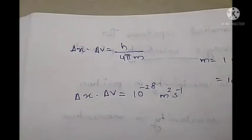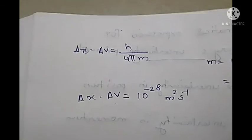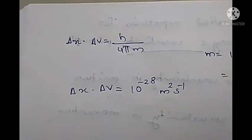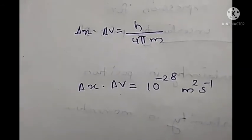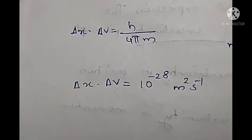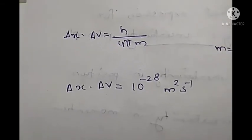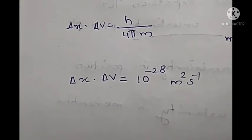According to Heisenberg's uncertainty principle, Bohr's concept of a fixed circular path with definite position and momentum of the electron has been replaced by stating that the electron has only a probability of having a given position and momentum. We cannot predict that an electron can be seen in a fixed circular path around the nucleus; we can only say there is a probability of finding the electron. That is the basis of the quantum mechanical model of atom. In the next class, we can discuss about the quantum mechanical model of atom.